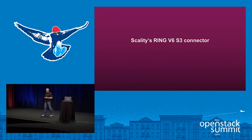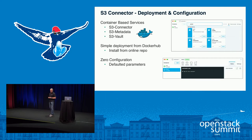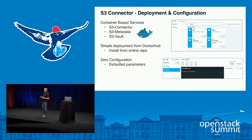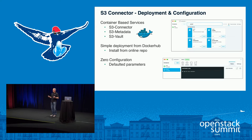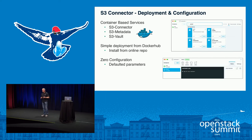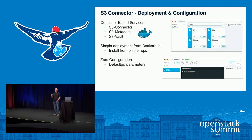Our refreshed S3 connector for version six takes a new approach to deployment. We wanted to make it as easy as possible for customers to deploy and configure it with minimal tuning. We went to a Docker container deployment model — the customer downloads these Docker containers, installs them on the connector, and now has an S3 API available. This makes deployment much quicker, simpler for the customer, and they can be up and running quickly with zero configuration. We picked best practices for setup so it works for the majority of use cases and file types.